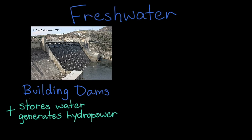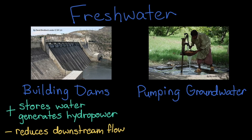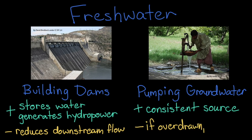However, by changing the natural flow of the water, dams can reduce the amount of water available to communities and ecosystems further downstream. People may also redistribute fresh water by pumping it up from underground. Groundwater can consistently provide fresh water in places where other sources are scarce, but if communities draw that groundwater up faster than the water cycle can replenish it, it can dry up.